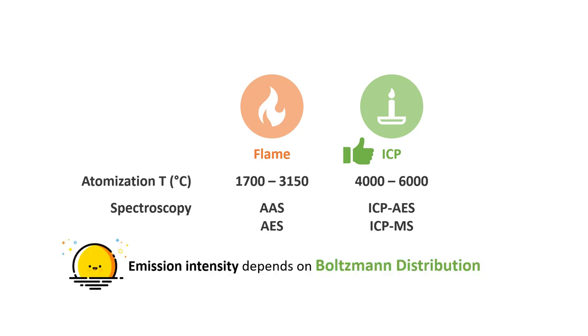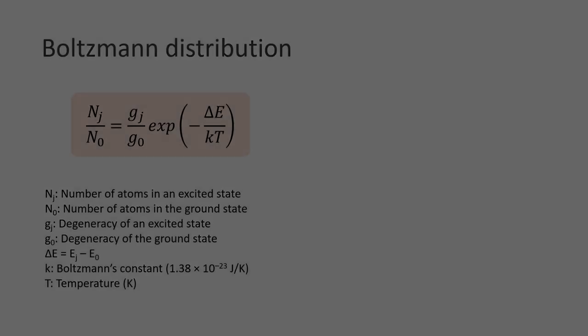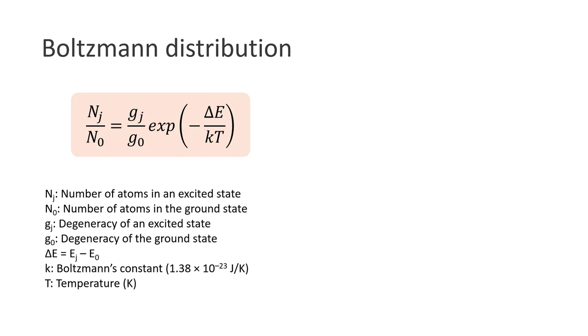This is because the emission intensity depends on Boltzmann distribution. According to Boltzmann distribution, the ratio between the population of the excited state and the population of the ground state can be calculated using this equation, where Gj and G0 are the degeneracy of an excited state and the ground state respectively. Delta E is the energy gap between the excited state and the ground state. K is the Boltzmann constant and T is the temperature in Kelvin.